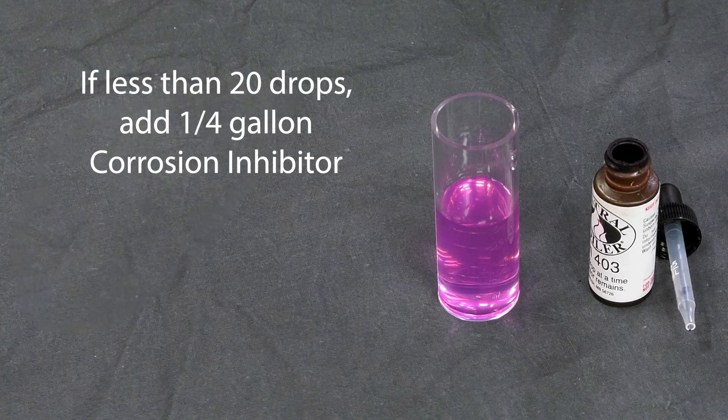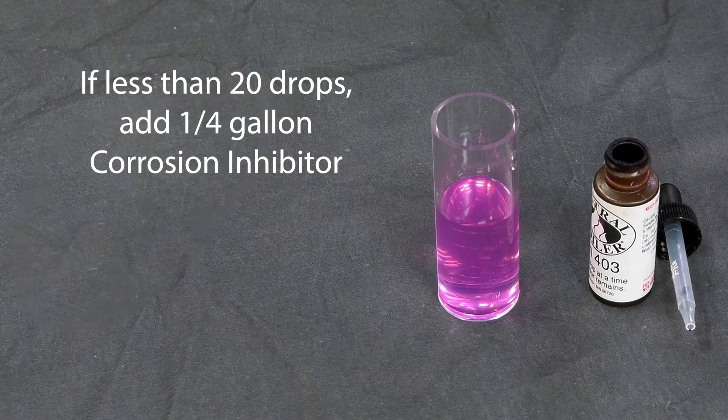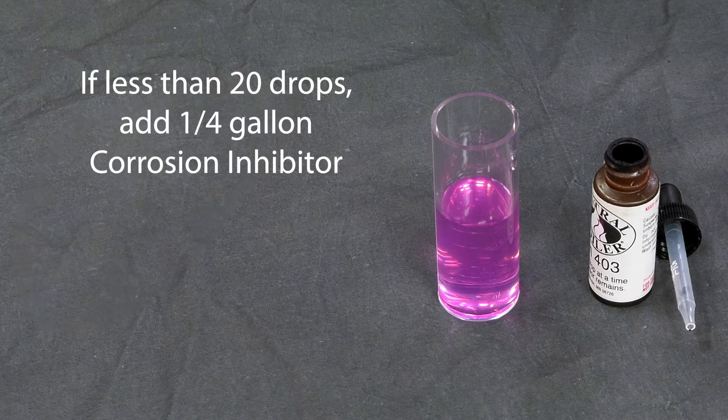If it took less than 20 drops, add a quarter gallon of corrosion inhibitor and perform the test again after the water has circulated for 24 hours.